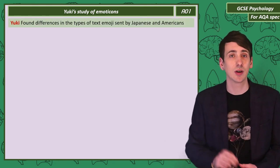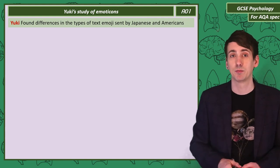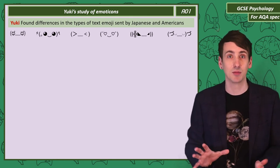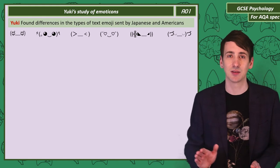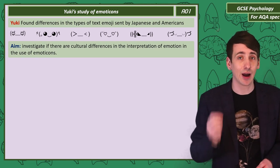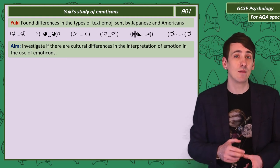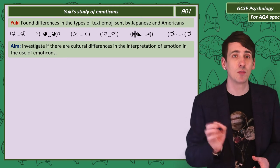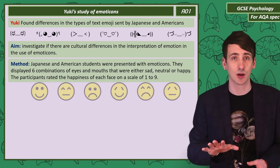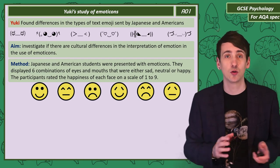We have a research study on body language to consider — by a researcher called Yuki, who was interested in differences between the emoji used by his Japanese and American friends. Japanese text emoji focus on the eyes, while Western emoji tend to emphasise the mouth. Yuki set up a study investigating cultural differences in the interpretation of emotion in emojis. The method involved presenting Japanese and American participants with specially developed emoticons combining eyes and mouths that were either sad, neutral or happy.